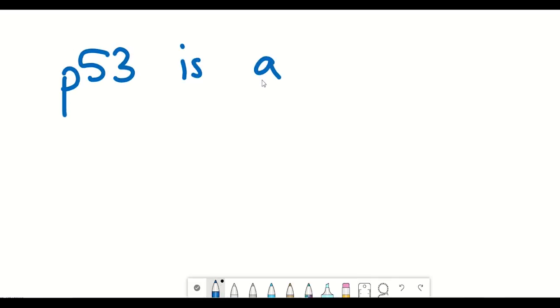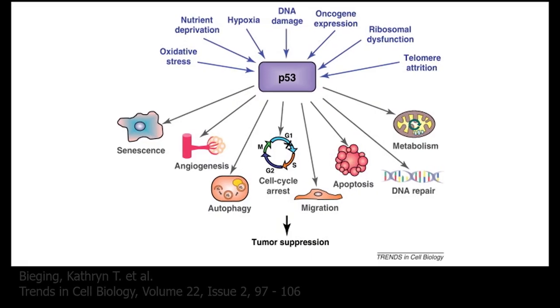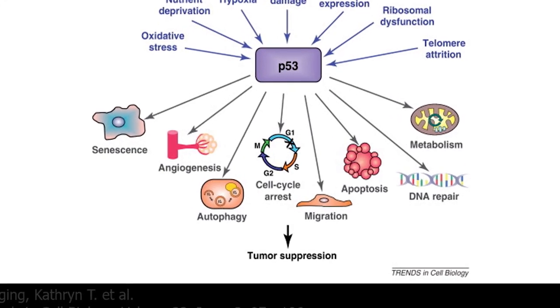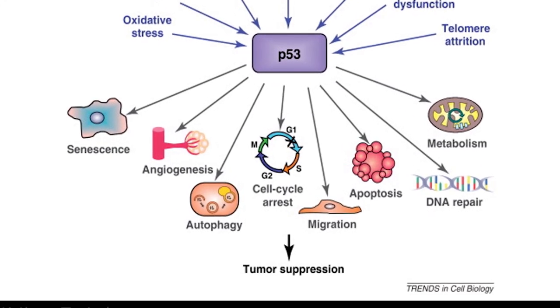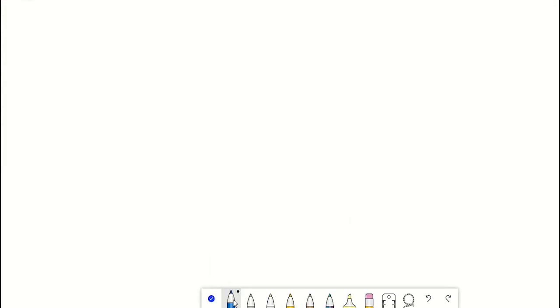So in many ways P53 is acting as a tumor suppressor. If anything goes wrong within a cell it tries to mediate the response and if it can't it will prevent that cell from replicating and causing further damage which could result in tumorigenesis. So what happens if you don't have P53 in a cell?